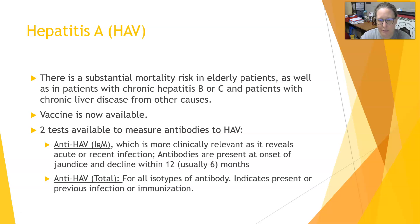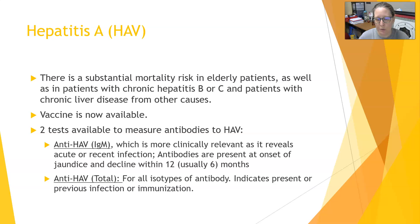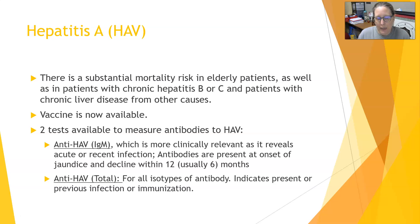There are two tests available to measure antibodies to hepatitis A. The first is anti-HAV IgM — IgM antibodies always rise first in any infection, so this is more clinically relevant because it indicates acute or recent infection. Antibodies are present at the onset of jaundice and decline within six to twelve months. The second is total anti-HAV antibody, which includes all isotypes such as IgM and IgG, and can indicate present or previous infection or immunization. Only IgM indicates recent infection.